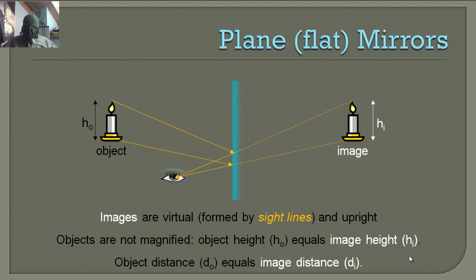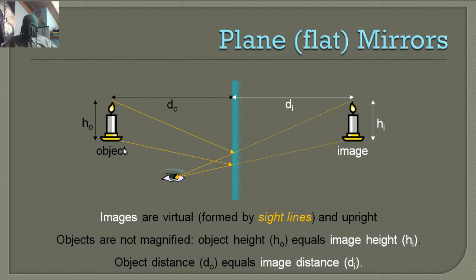Object distance DO equals image distance DI. So the distance from the object to the mirror is the same as the distance from the mirror to its image.